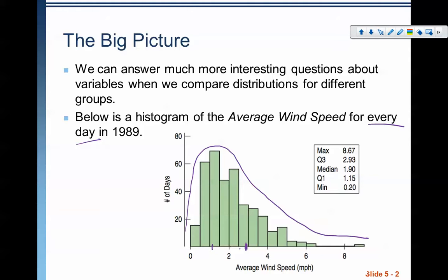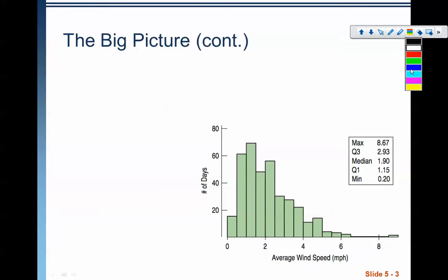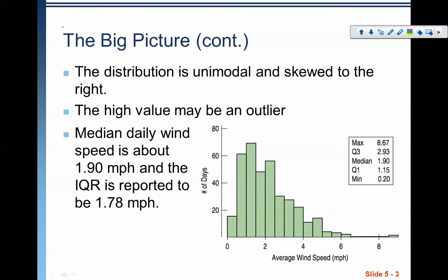For example, every day is a very broad set of data. But you know, as well as I know, that the weather is going to vary significantly depending on the season. So we have here, again, description. It's unimodal. It's skewed to the right.